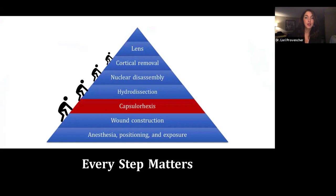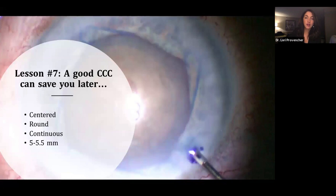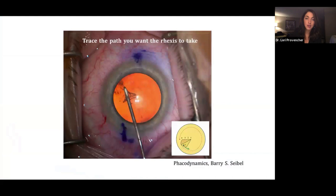So we'll go next to capsulorexis tips. I learned really early that if I'm going into a case and I'm worried about it being complex or I'm worried about something going wrong, I really want to focus in and get a good capsulorexis because it can save you later. The goal is to have a centered, round, continuous rexis and about 5 to 5.5 millimeters in size, generally. I learned that in order to get the rexis you want, you want to trace the path you want it to take.